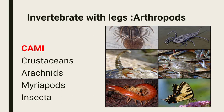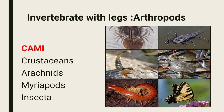Invertebrates with legs, that is Arthropoda, and their classes can be remembered by learning the word CAMI, which stands for Crustaceans, Arachnids, Myriapoda, and Insecta. That's how we can remember these names. Thank you.